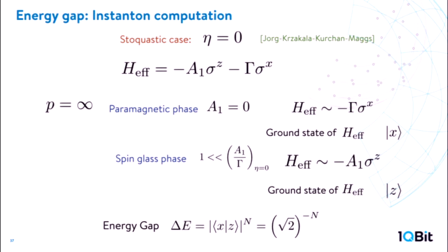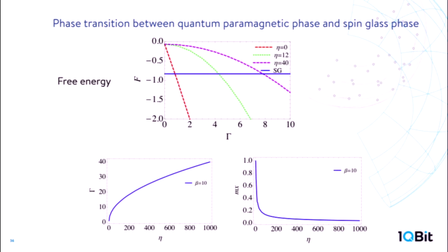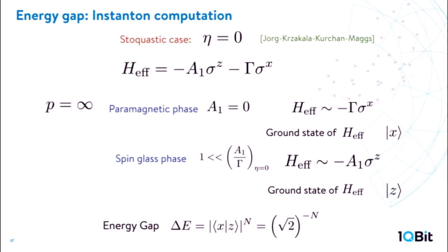To understand what this means, we can estimate the energy gap at the first-order phase transition using the instanton solution. We look at the effective Hamiltonian and its ground states — this reproduces the work by Jorg and collaborators. In the paramagnetic phase, A1 is equal to zero, so the effective Hamiltonian points in the x direction and the ground state points in x. In the spin glass phase, A1 becomes very large, so effectively the Hamiltonian points in z. The instanton value is the overlap between x and z spin states, given by one over root two after normalization.